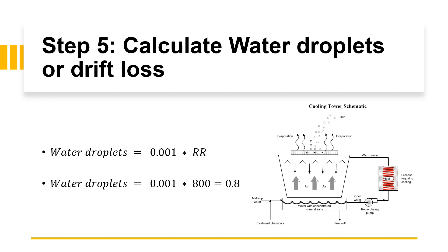Now let's calculate the water lost through drifting or droplets. We can see this will be 0.1 of our circulation rate, hence 0.001 multiply by 800.